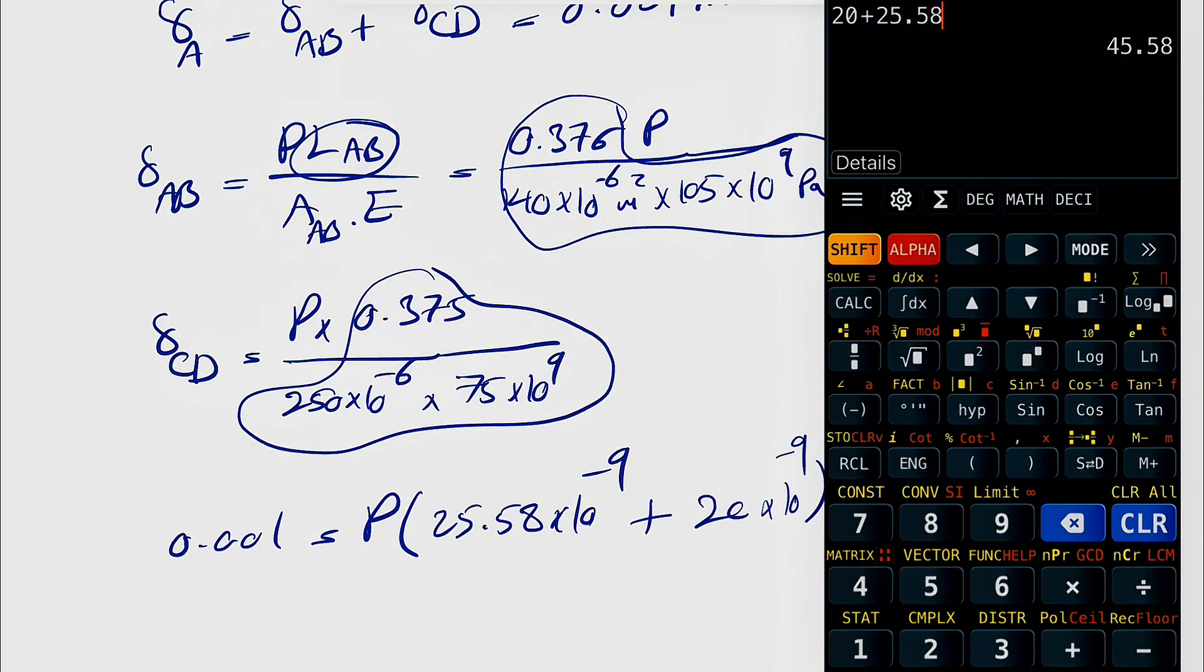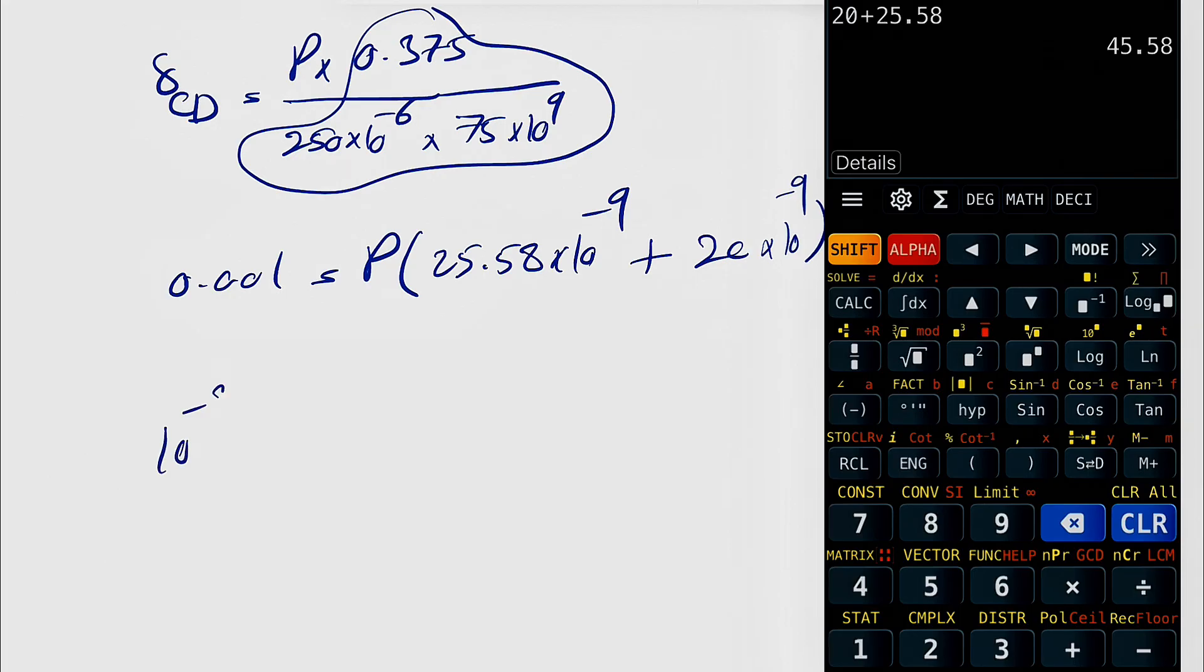And this is going to be 20 times 10 to the minus 9. So we're going to have 20 plus 25.58. So for solving this, we have 10 to the minus 3, we have 45.58 P times 10 to the minus 9.